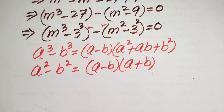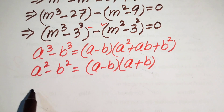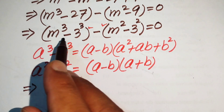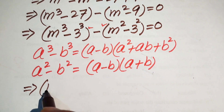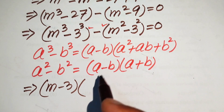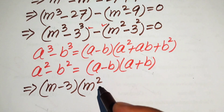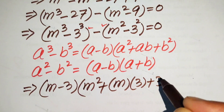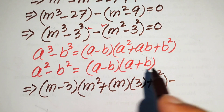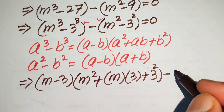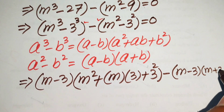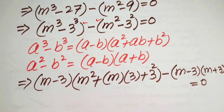Applying these two formulas to the equation: using the cubic formula we get m minus 3 times of m squared plus 3m plus 9, and for m squared minus 3 squared we get m minus 3 times of m plus 3, and the whole equation equals 0.